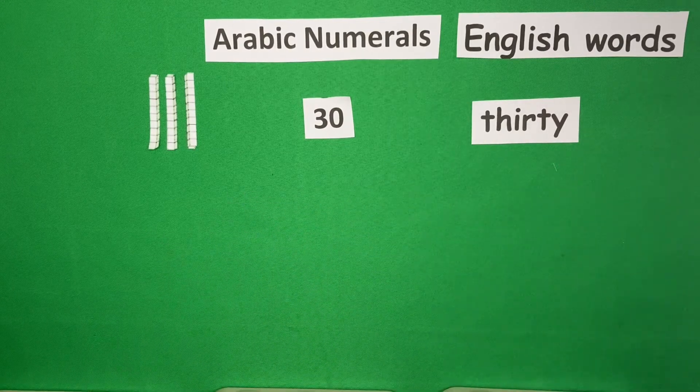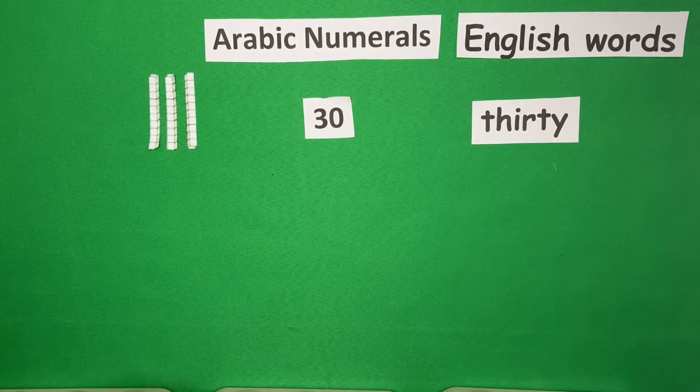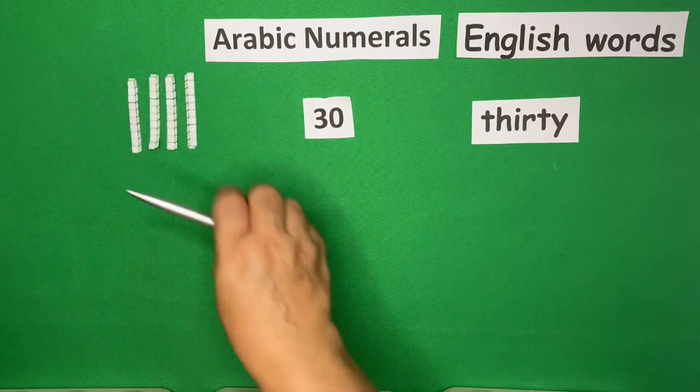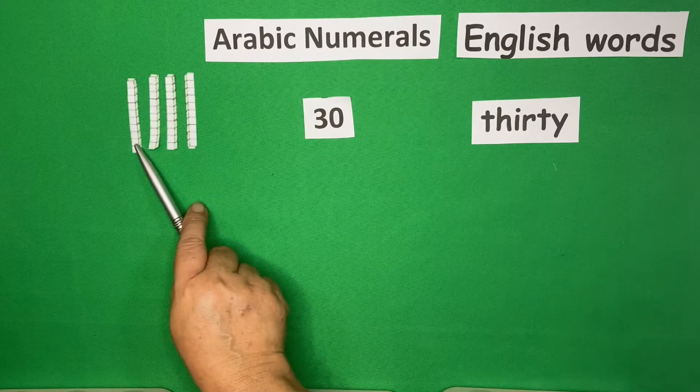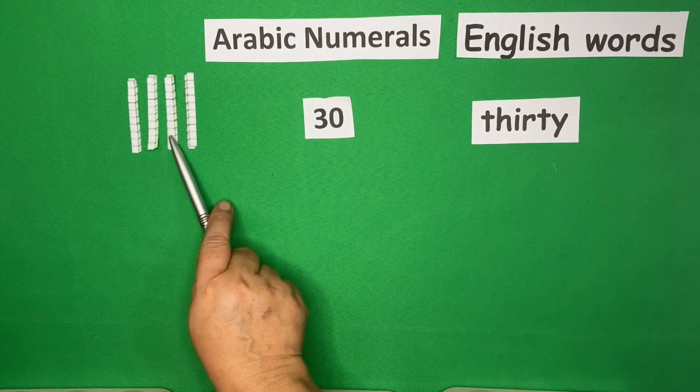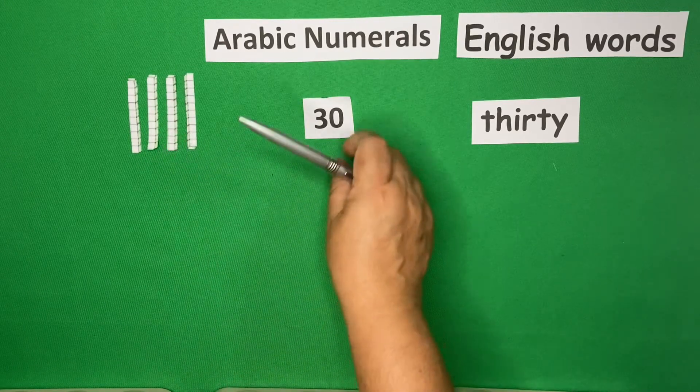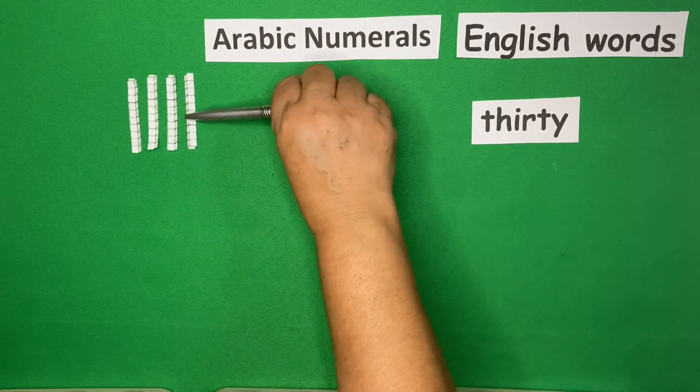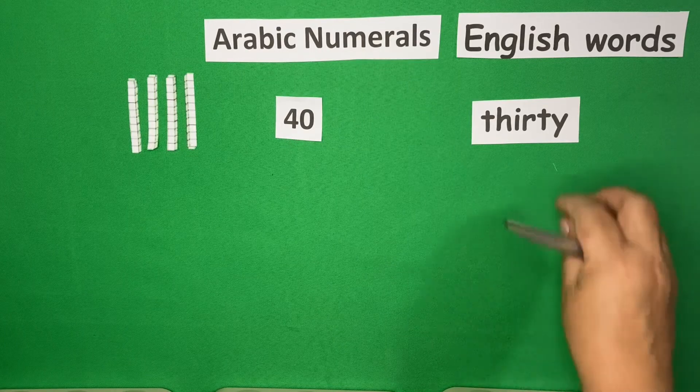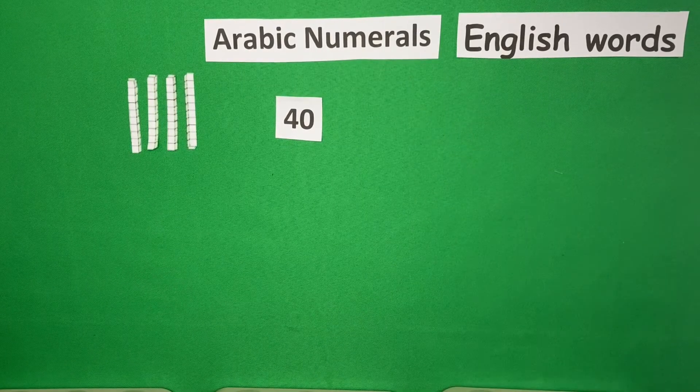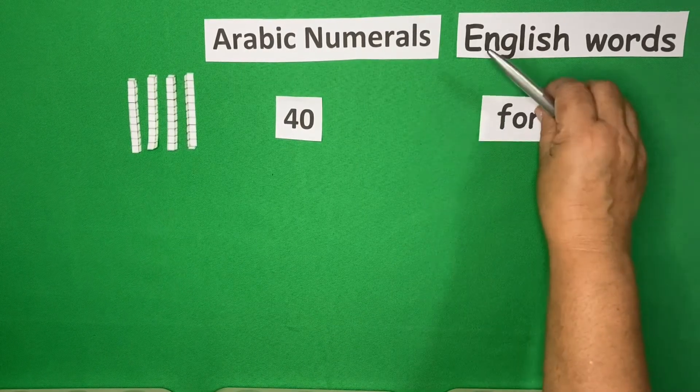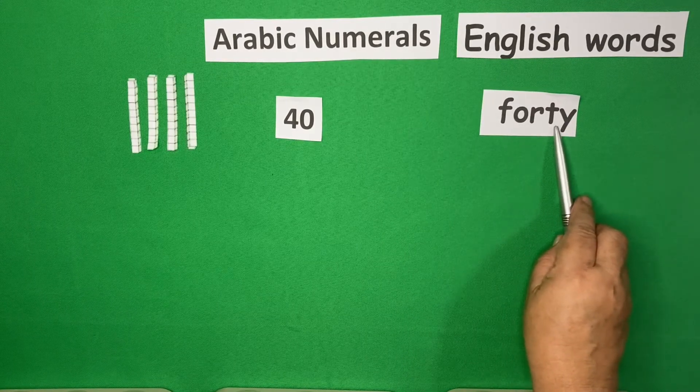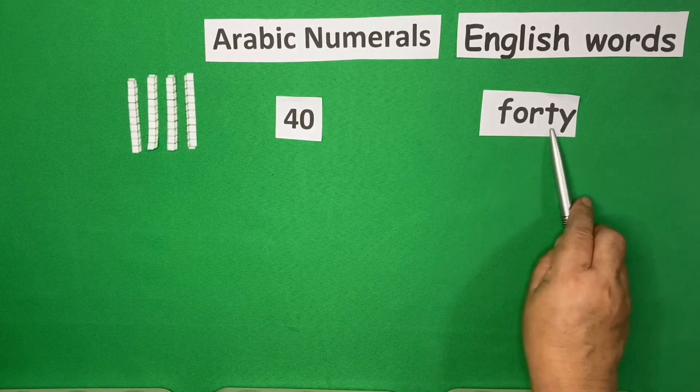Then, I will add 1 more of this. Now, we will have 10, 20, 30, 40. So, the Arabic numerals for 40 is this. And in English words, 40 is F-O-R-T-Y.